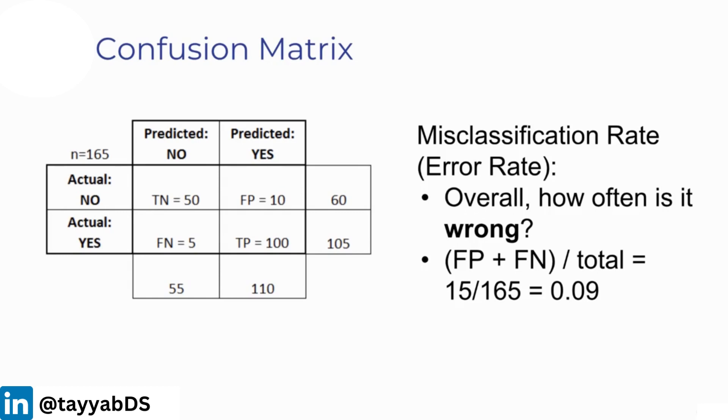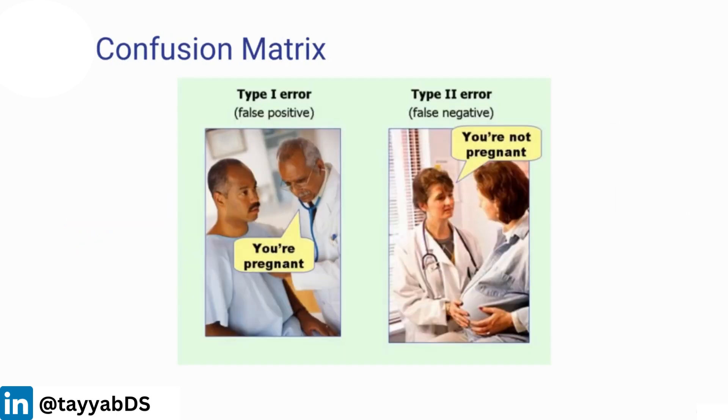Now there's other things you can calculate, such as the misclassification rate or error rate. That's essentially the reverse of accuracy. It's just asking, overall, how often am I wrong? So that's false positives plus false negatives divided by total, or 100 minus accuracy. In this case, we're 9% error rate.